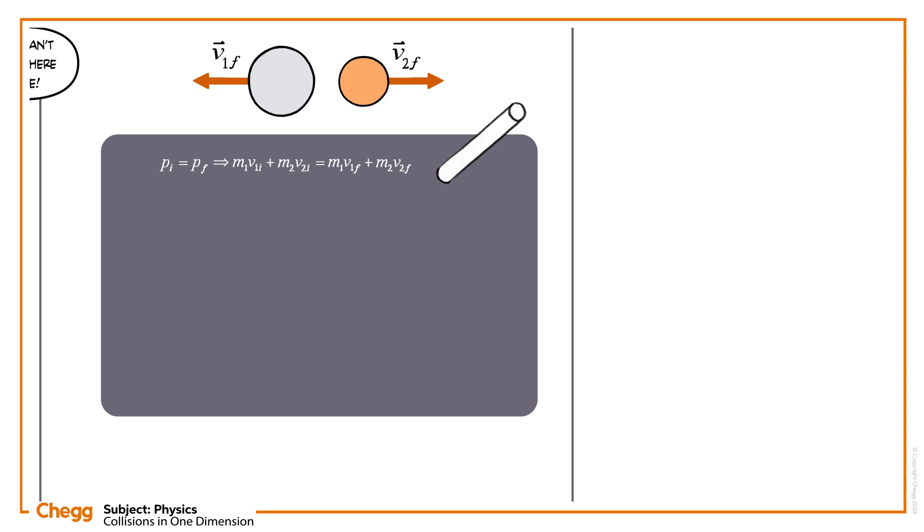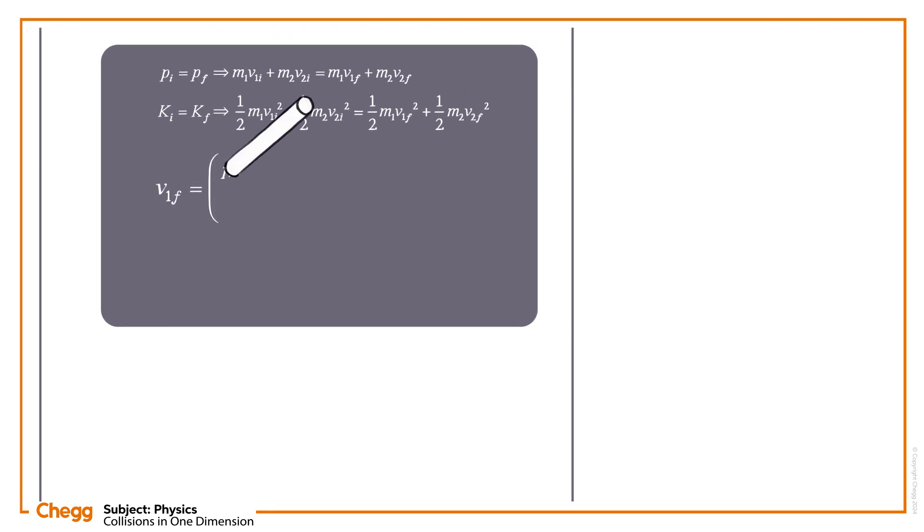As per the definition of elastic, the kinetic energy of the collision is conserved, so the initial kinetic energy is equal to the final kinetic energy. Ki is equal to Kf. Combining those two equations above gives us the equation for the final velocity of each mass, V1f and V2f.